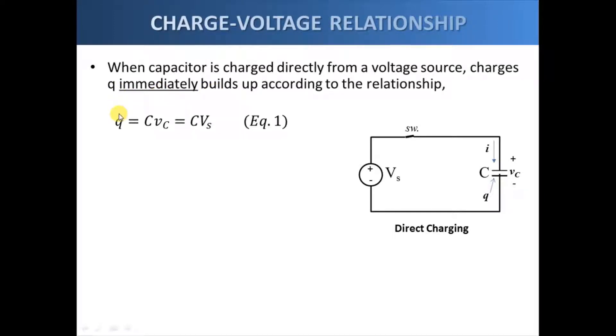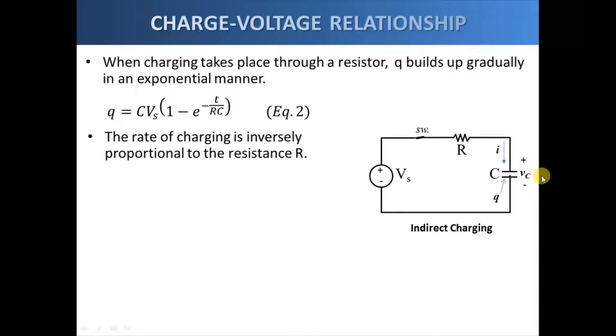With q equals to the relationship that we have covered earlier which is c times the voltage applied to the capacitor. So since v sub c equals v sub s, we have the q stored in the capacitor as cv sub s.